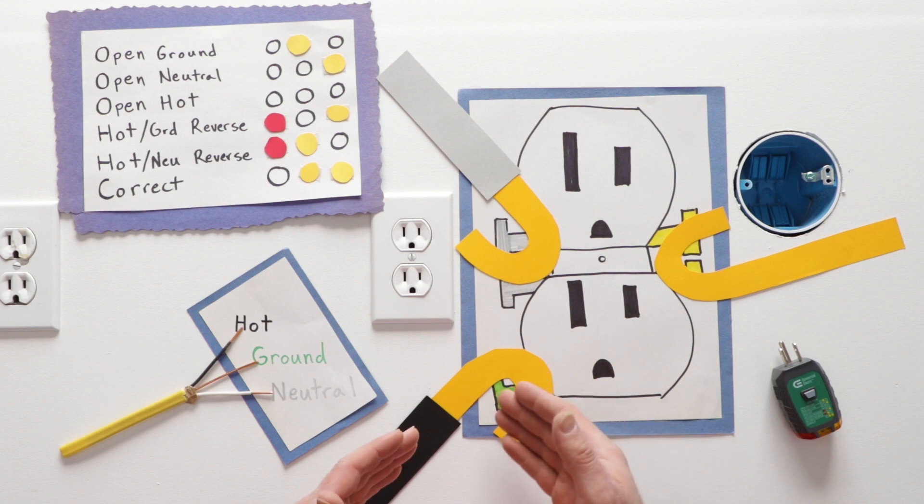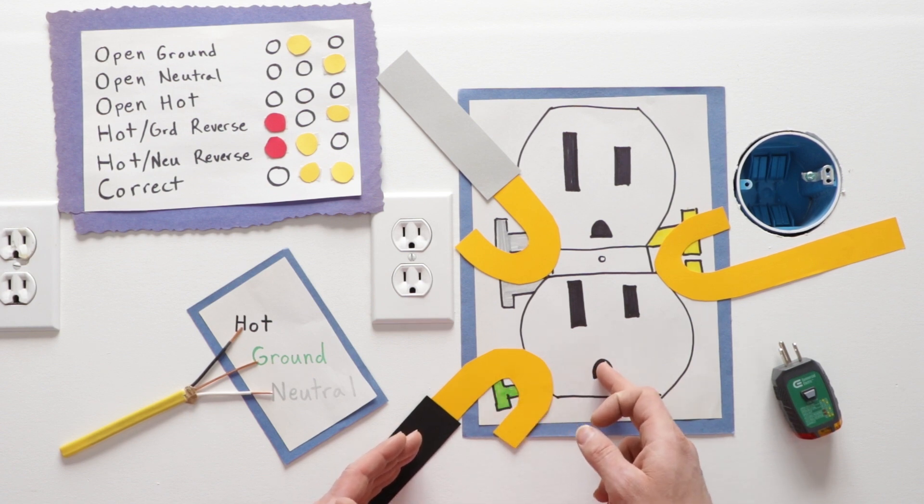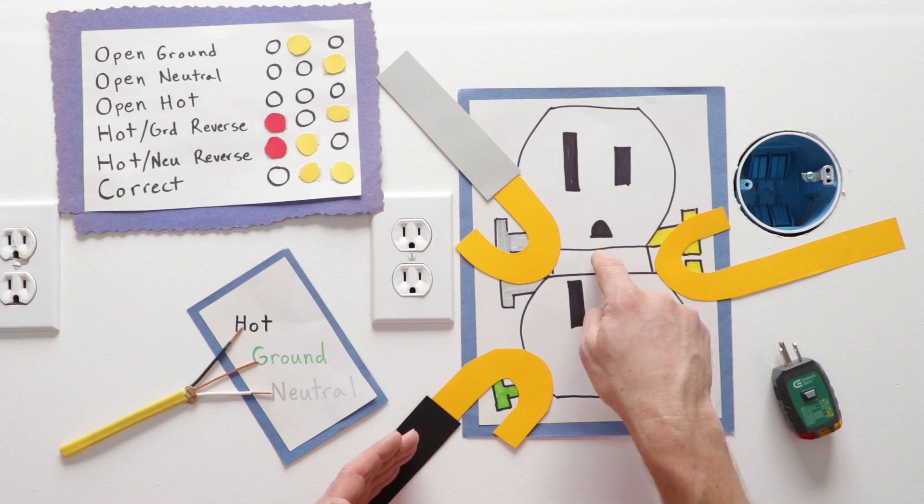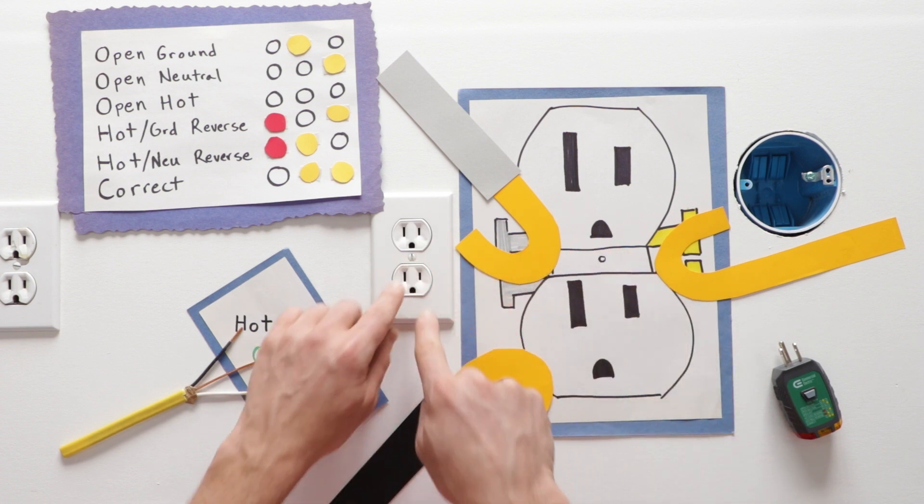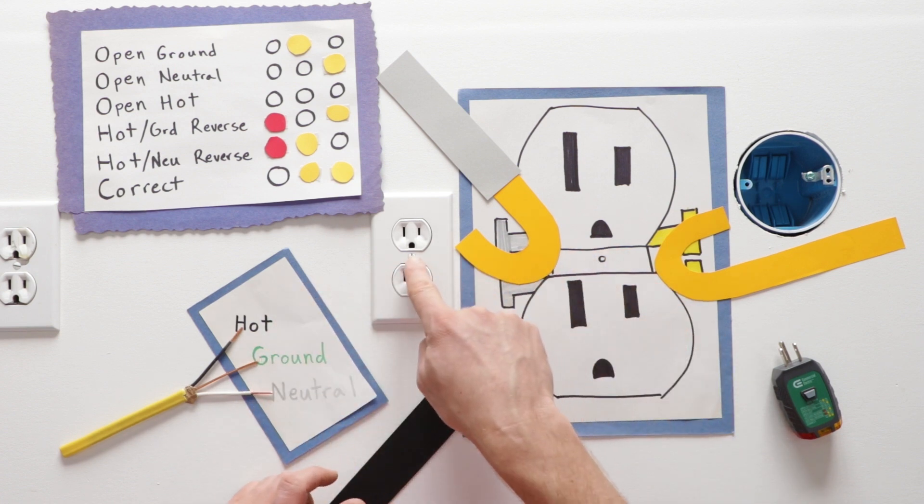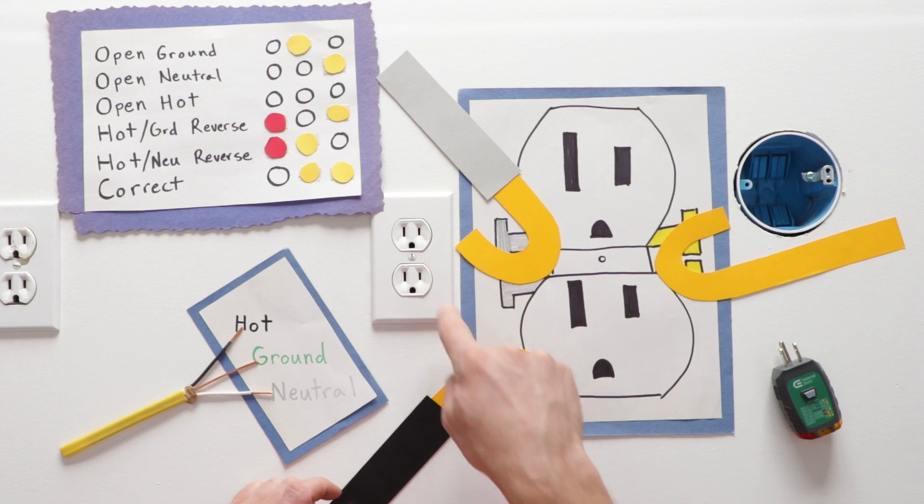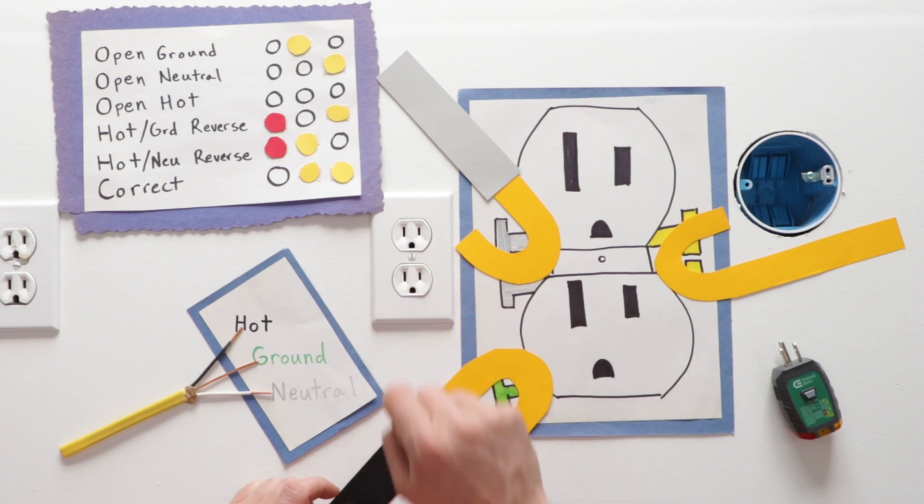In addition to you having power coming in here and power coming through there, there's sometimes a screw right here in the center of the plate that's connected, that's grounded to this. So you could have open power just coming out of that screw right there.